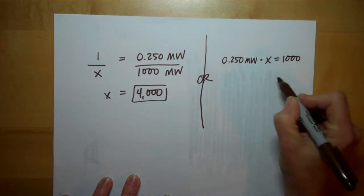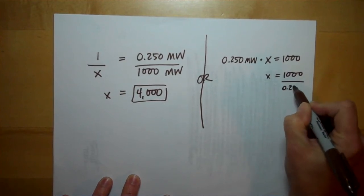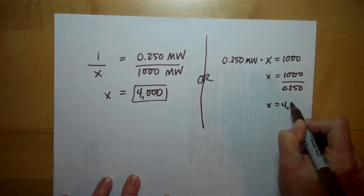It's the same thing. So, X is, it's the same as this proportion. X is 1,000 divided by .25. So, X comes out to 4,000.